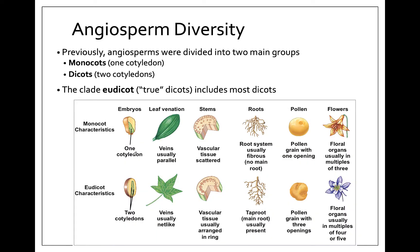Previously, angiosperms were divided into two main groups, monocots and dicots, based purely on the number of cotyledons visible in the seed. A cotyledon is basically the seed leaf — the very first leaf, not a true leaf. Monocotyledons have one single cotyledon, and dicotyledons have two. So if you've ever seen a plant germinate, that's just the number of leaves that come out of the seed.